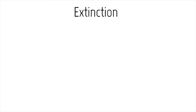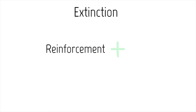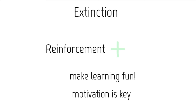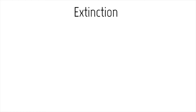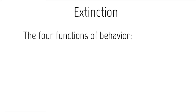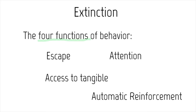Before we talk about extinction, we need to understand reinforcement. Reinforcement is so important in ABA. We have to make sure that we're reinforcing appropriate behaviors, make learning fun, and keep kids intrinsically motivated. In order to do that, we have to create replacement behaviors and a preferred, motivating environment. We also need to understand the functions of behavior — the four functions are escape, attention, access to tangibles, and automatic reinforcement or sensory-seeking behaviors.